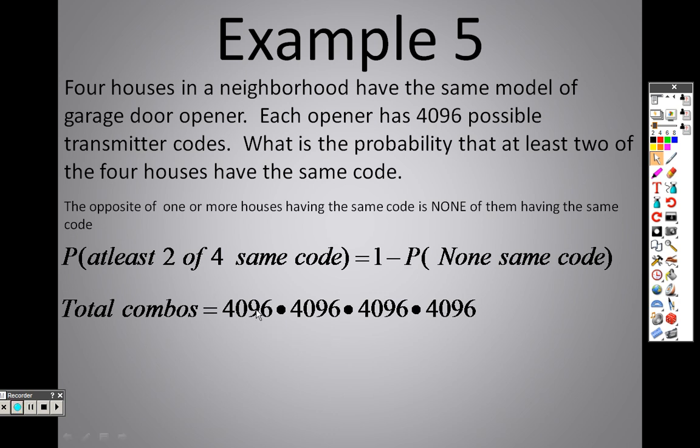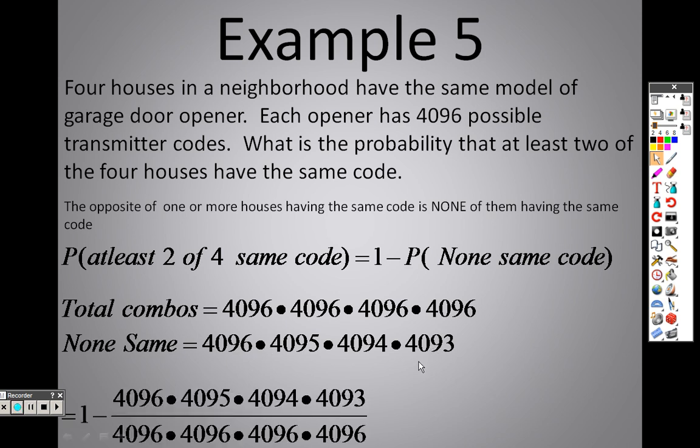The total number of combinations is the first house has 4,096, house 2 has 4,096, house 3 has 4,096, house 4 has 4,096. The number that they aren't the same, the first person has 4,096 choices, but the second person, he can't choose one of those codes anymore because if he chooses that code, it's going to be the same exact code as the neighbor. So he only has 4,095. And this person only has 4,094 because he can't choose what those two did. And this person only has 4,093 because he can't choose what those three did.